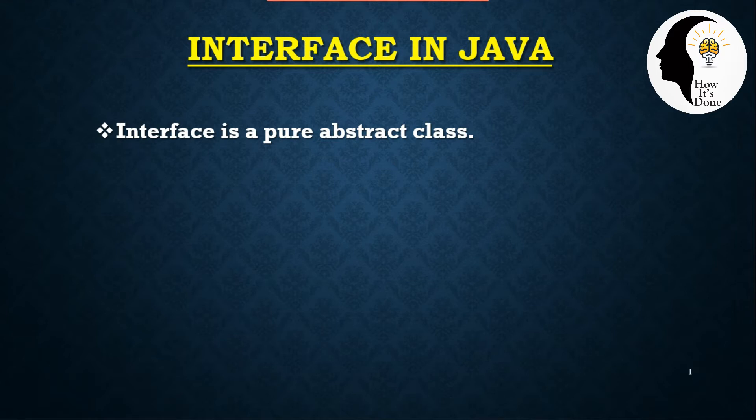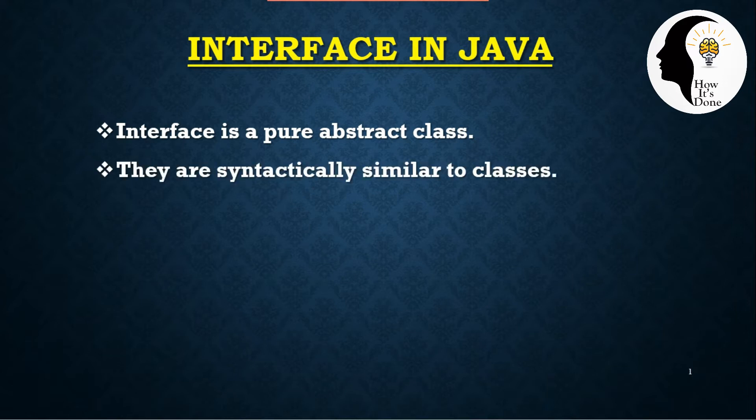In an interface, we use a method without a body — that is, a declaration method. They are syntactically similar to classes; the syntax is similar to a class definition.